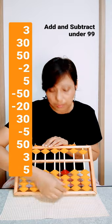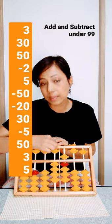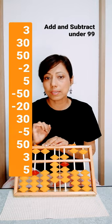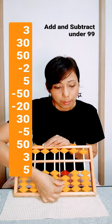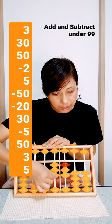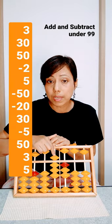First you have to know how to make 99 on the abacus. This 9 and this 9, it is 99 on the abacus. So let's start. There is a question: first place 3 and place 30, place 50. We are using 50 for the very first time.